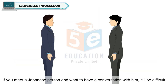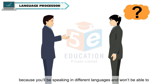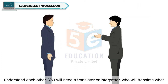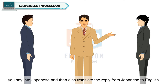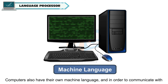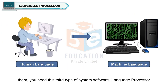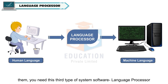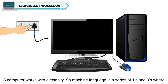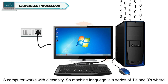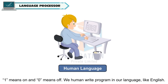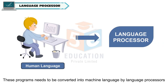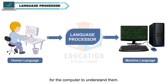If you meet a Japanese person and want to have a conversation with him, it will be difficult because you will be speaking in different languages and won't be able to understand each other. You will need a translator or interpreter who will translate what you say into Japanese and then also translate the reply from Japanese to English. Computers also have their own machine language. A computer works with electricity, so machine language is a series of ones and zeros where one means on and zero means off. We humans write programs in our language like English.